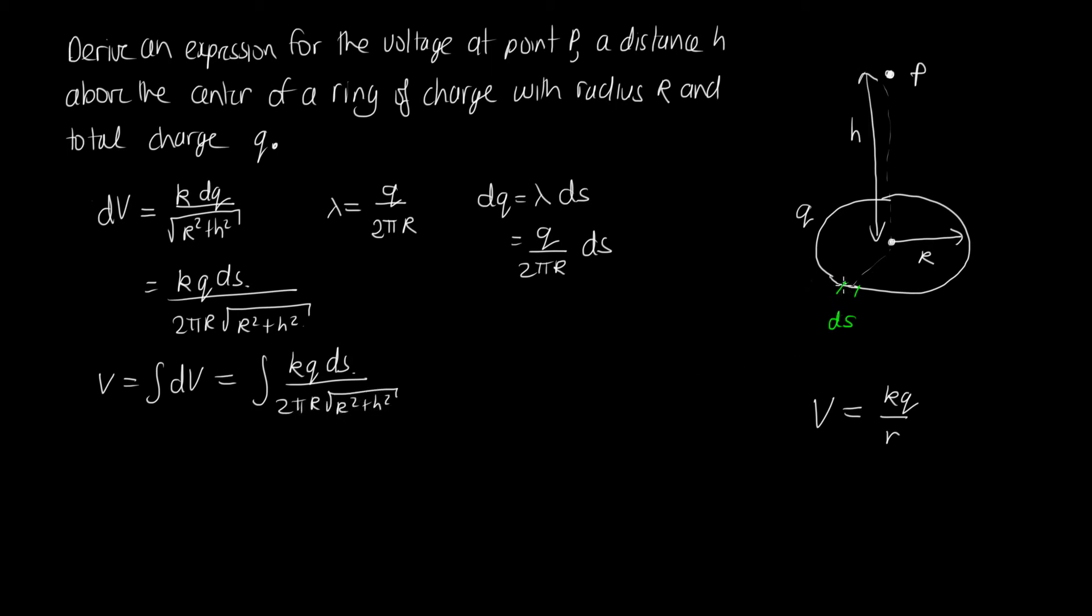And then because we're going around the circle, we're going from s equals 0 all the way around and back one circumference. So we're going from 0 up to 2πR.